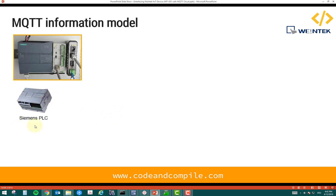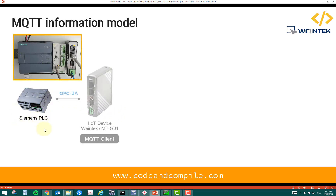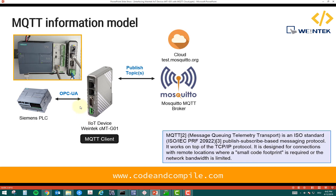Initially, we have a Siemens PLC which is linked to the IoT device via OPC UA — we have seen this before in my previous videos. Now what we're going to do is have this MQTT client publish a topic to the Mosquitto MQTT broker.